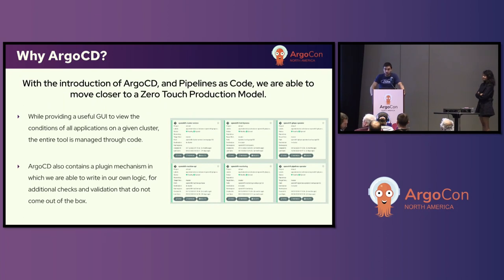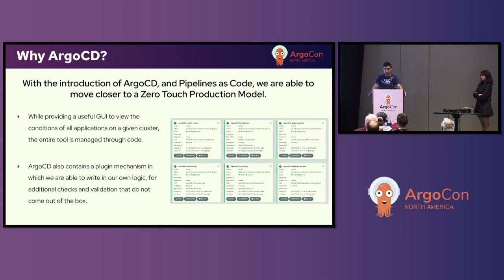Why do we use Argo CD over another product? Their plugin mechanism is very extensible and very helpful. Argo CD out of the box takes your YAML and applies it to the cluster, but there are cases where you want more checks in place in between the YAML and the cluster. Using the CMP plugins, we're able to extend Argo CD to do those custom checks. The metrics that Argo CD exposes into OpenShift are also useful for tracking purposes, and we aggregate those across all our clusters into one place so we can see across the fleet what Argo is doing.